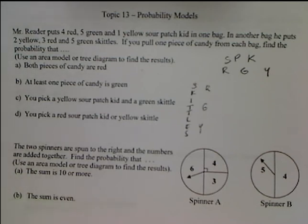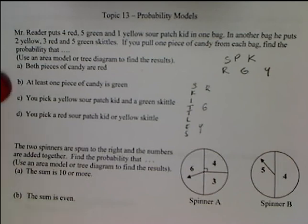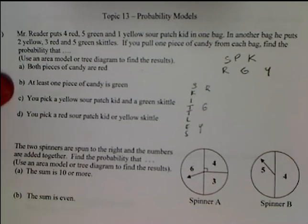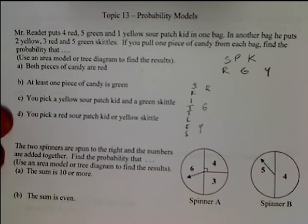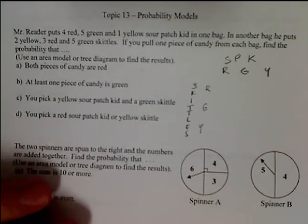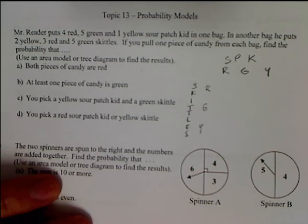We're going to look at the probability that both pieces are red, so I've got to find the probability that I get red, red. Their probabilities are not all equal — we don't have an equal amount of each one, so we have to be careful. At least one of the pieces of candy is green, then you pick a yellow Sour Patch Kid and a green Skittle, and then you pick a red Sour Patch Kid or a yellow Skittle. Now I'm going to calculate the probabilities for each one.